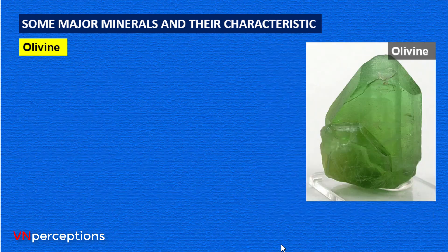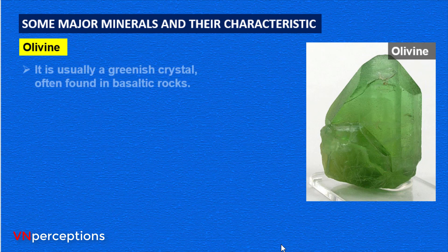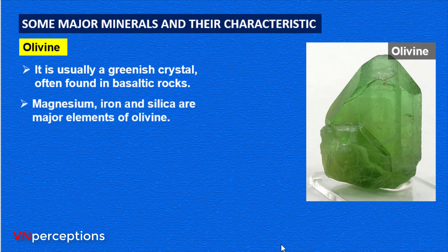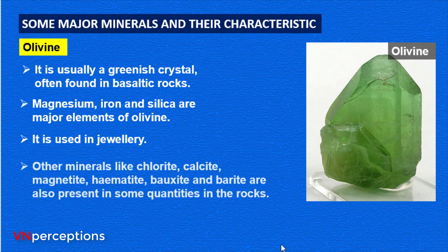Olivine is usually a greenish crystal often found in basaltic rocks. Its major elements are magnesium, iron and silica, and it is generally used in jewelry. Other minerals present in some quantities include chlorite, calcite, magnetite, hematite, bauxite, and barite.